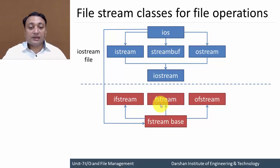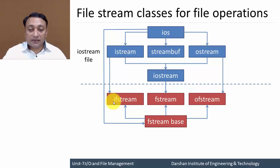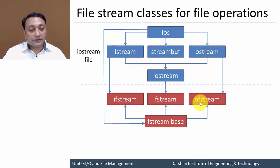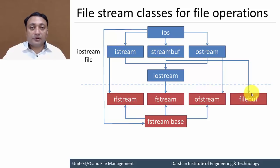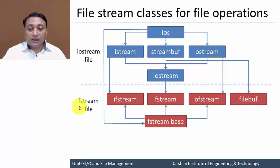From fstream_base we also derive the fstream class, which derives properties from the ios class as well. Member functions and member variables will be inherited by the fstream class. Similarly, members of istream are derived in ifstream, and members of ostream are derived in ofstream. Just like istream and ostream, the streambuf class derives filebuf, which is pointed to the file buffer. These classes are all defined in the fstream header file, so you must include fstream at the beginning of your program.